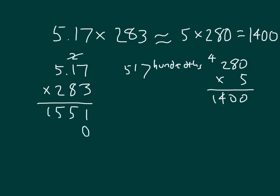Cross out the 2. I'll place a 0 to deal with the 8. 8 times 7 is 56. 6, regroup the 5. 8 times 1 is 8, plus 5 is 13. 3, regroup the 1. And 8 times 5 is 40, plus 1 is 41.